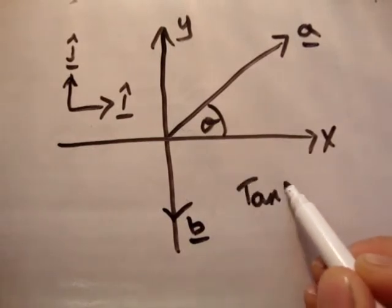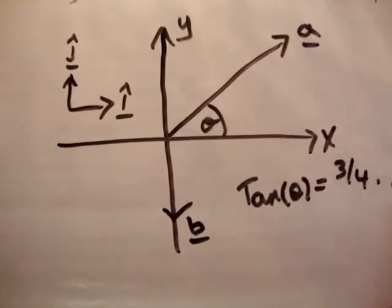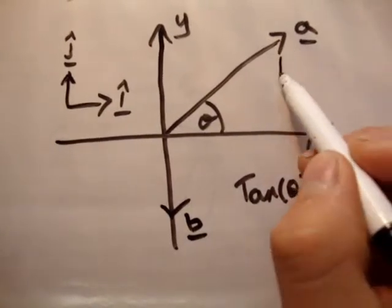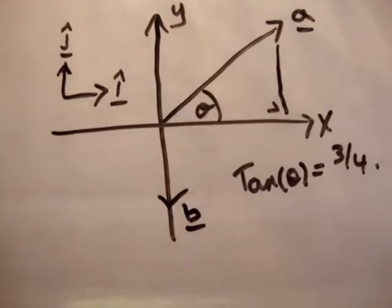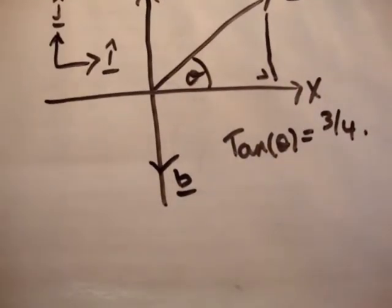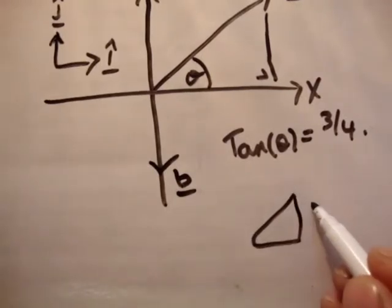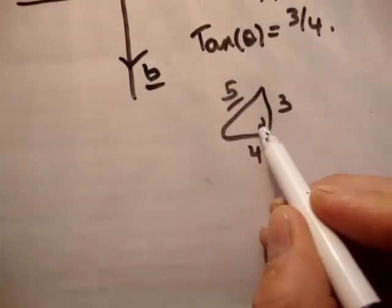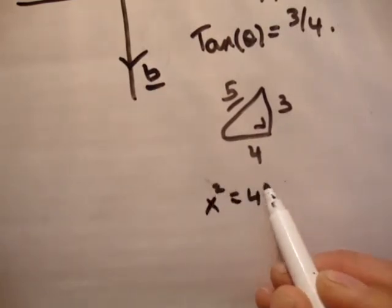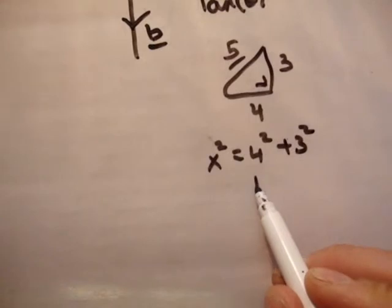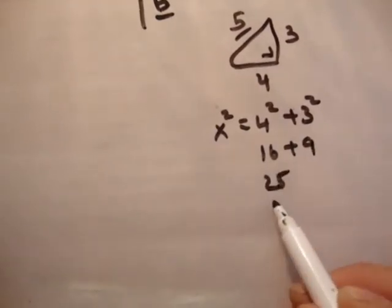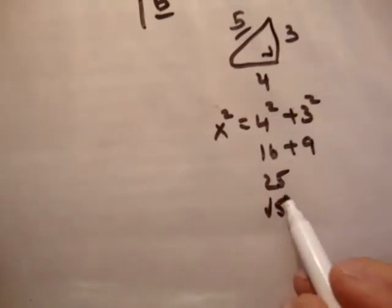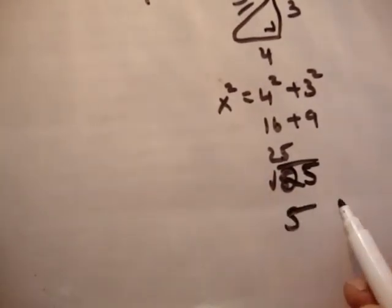It also says that tan theta equals 3 divided by 4. I see a typo in this, same as last time. This is a triangle. If we just have a triangle like this, if this is 3, this is 4, what's this? This equals 5. How do you know? It's Pythagoras. x squared equals 4 squared plus 3 squared equals 16 plus 9 equals 25, so root 25 equals 5.